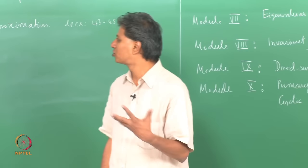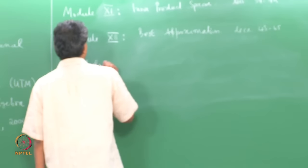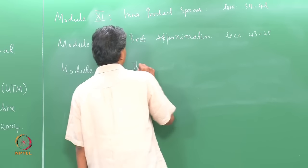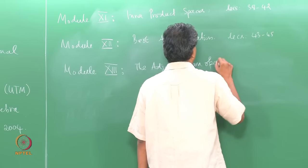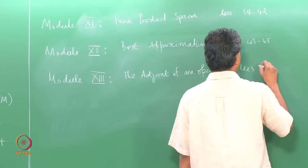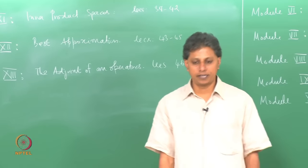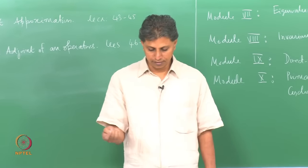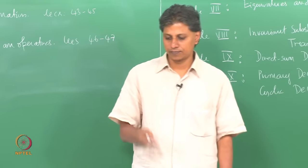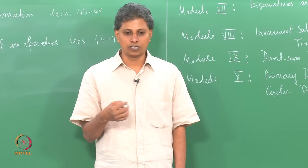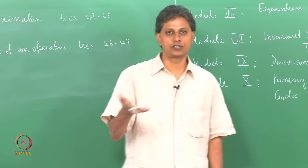Module 13, covered in lectures 46 and 47, discusses the adjoint of an operator. We cover the notion of the adjoint operator, its properties, examples, and the relationship between the matrix of an operator relative to an orthonormal basis and the matrix of its adjoint relative to the same orthonormal basis.